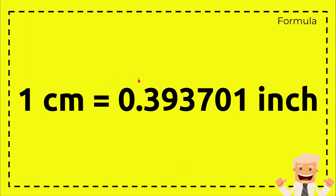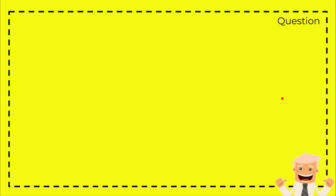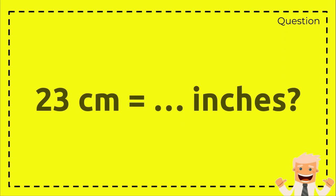The equation is 1 centimeter equals 0.393701 inch. And then this is the question: 23 centimeters equals how many inches?